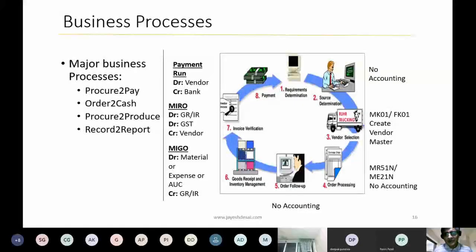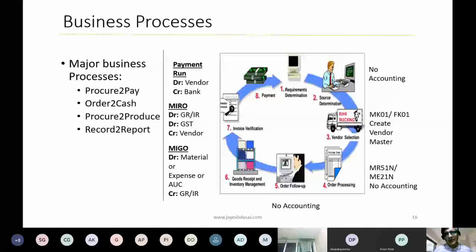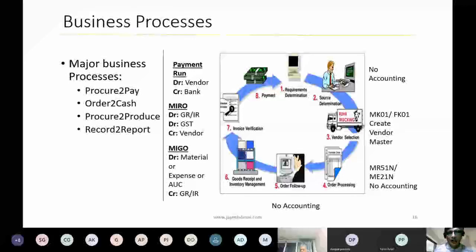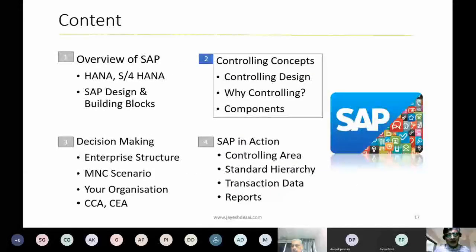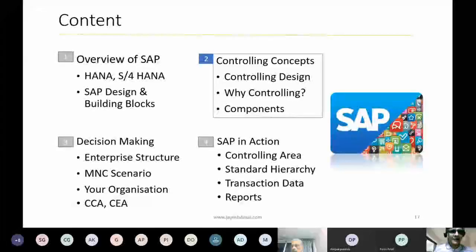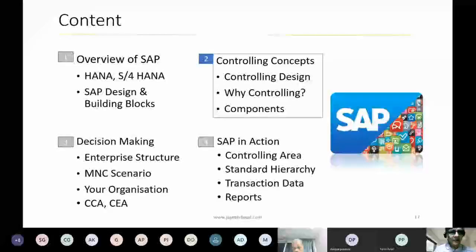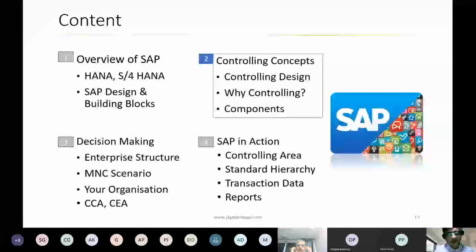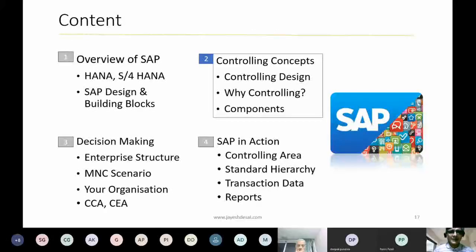Business processes are built very tightly in SAP. For example, the procure-to-pay process starts from requirement determination and ends with payment to the vendor — going through several departments and modules like a chain of events. Similarly, there is order-to-cash for the sales process. All these business processes finally merge into finance so you can see your income statement and profit and loss account.